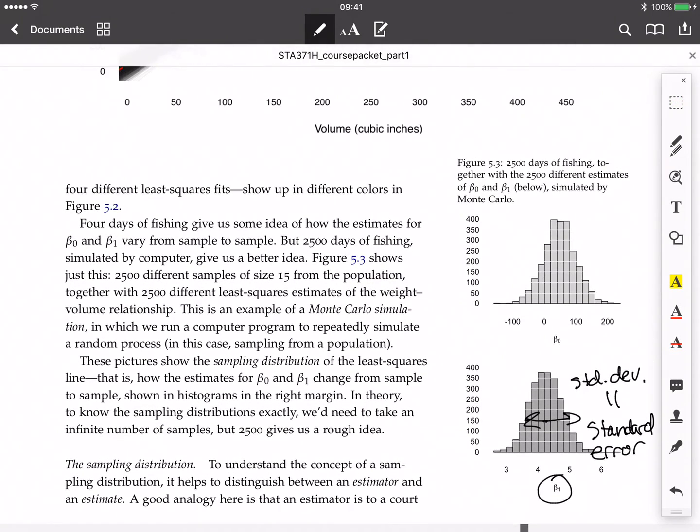And then this top one right here represents the sampling distribution of all 2,500 intercepts from that picture above. So those are our sampling distributions.